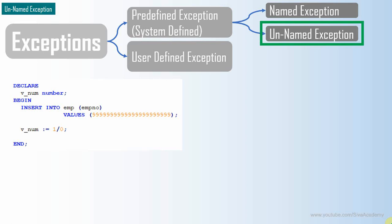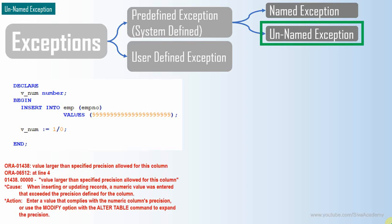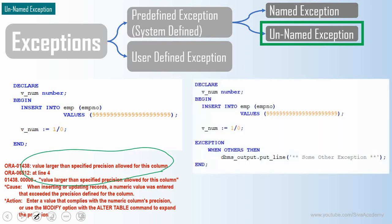Here is a simple PL/SQL block where I am trying to insert a very large employee number value into the employee table. The employee number column is defined for four characters only, whereas I am trying to insert a much larger value. This will obviously throw an error: 'value larger than the precision allowed for this column.' This particular exception doesn't have a name.